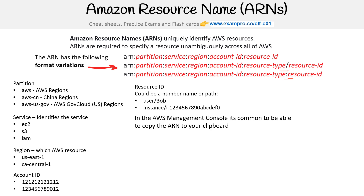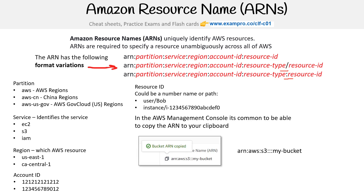Most ARNs are accessible via the AWS Management Console, and you can usually click the ARN to copy it to your clipboard. Here is an example for an S3 bucket. Notice it's a little different because S3 is a global service, so there's no need to specify the region or the account ID, or even the resource type. We already know it's a bucket, so we can just say the bucket name — it's really short.